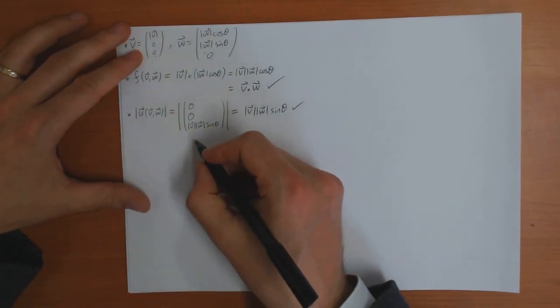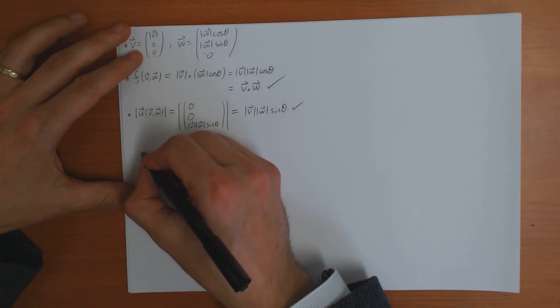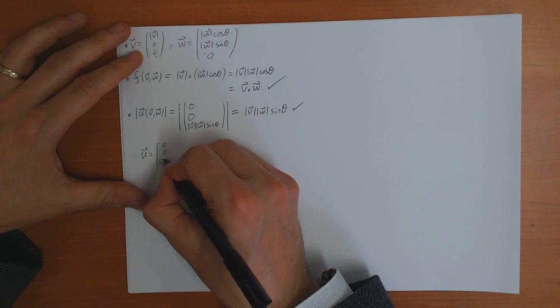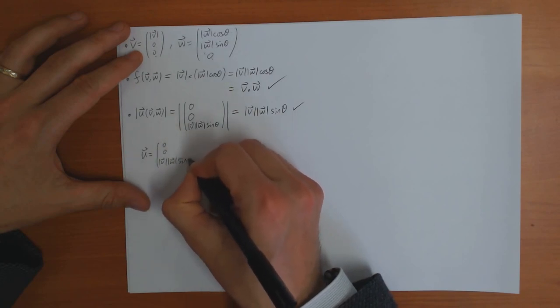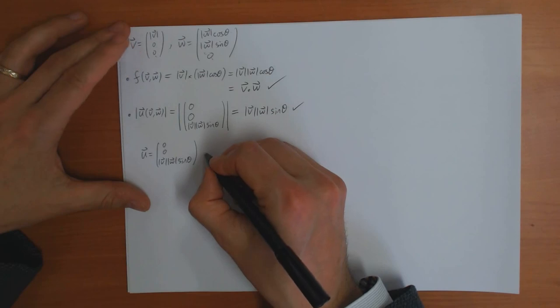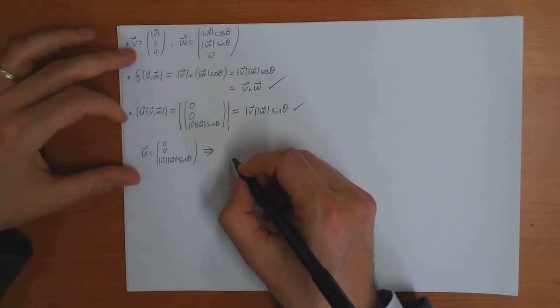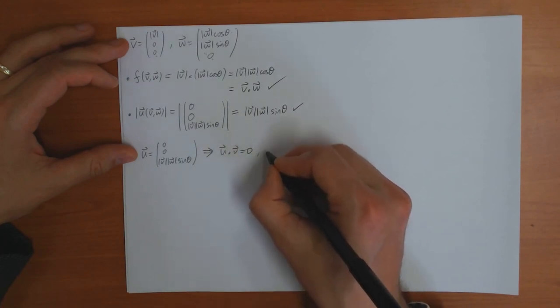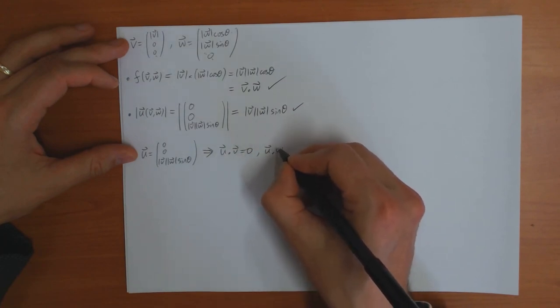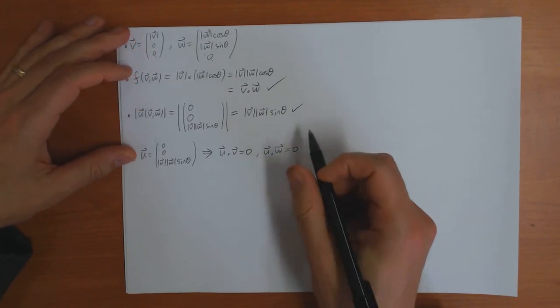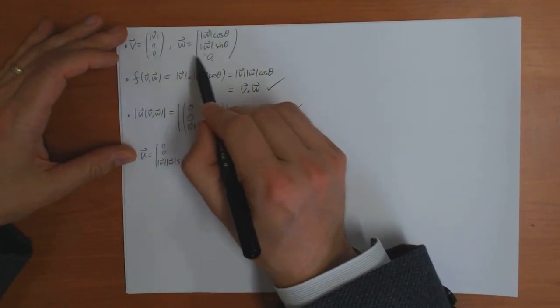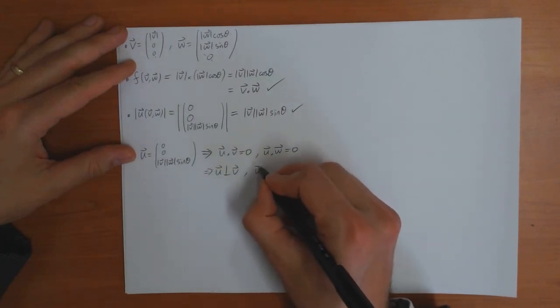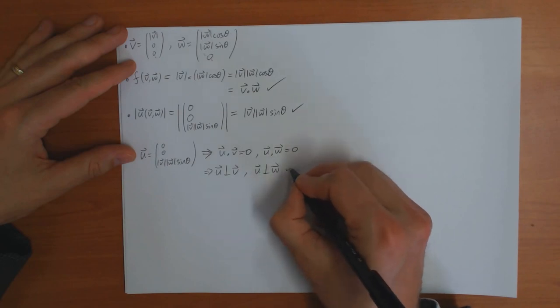Next we have to check that it's perpendicular to v and w. So u is zero, zero, length v, length w, sin theta. And you can easily check then from here and here u dot v is zero and u dot w is zero because both of them have zeros in the final place. So this means that u is perpendicular to v and u is perpendicular to w.